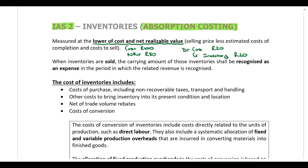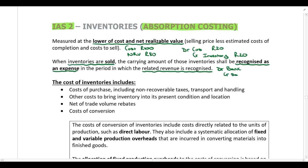When inventory is sold, it is recognized as an expense in the same period that revenue is recognized. When a company sells inventory, they process two journal entries: one for the sale, and one to expense the inventory. This is your matching principle — initially inventory is treated as an asset, and when it is sold, we expense it in the same period we recognize the sale.